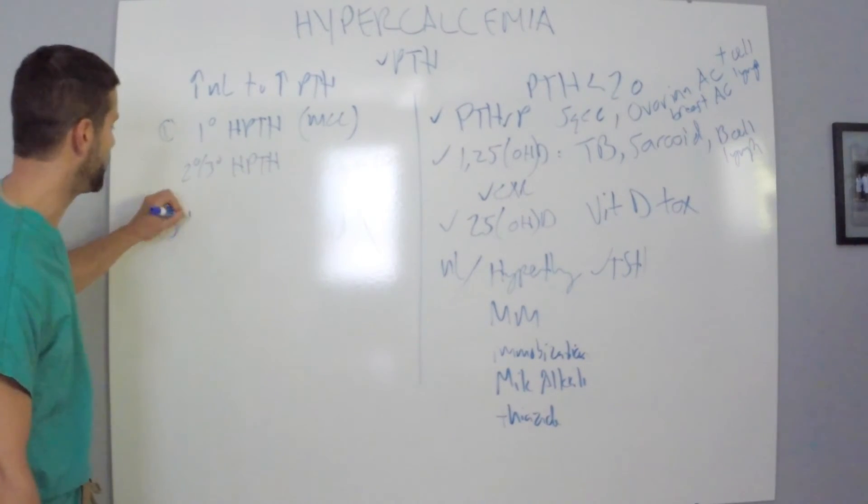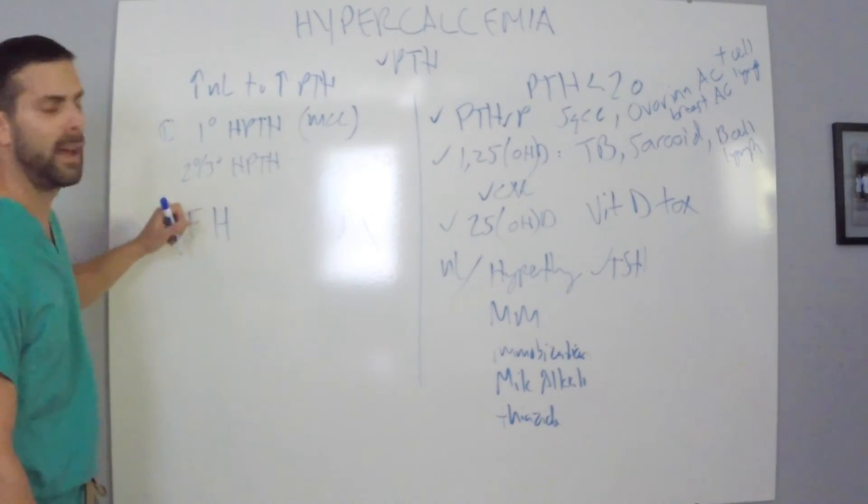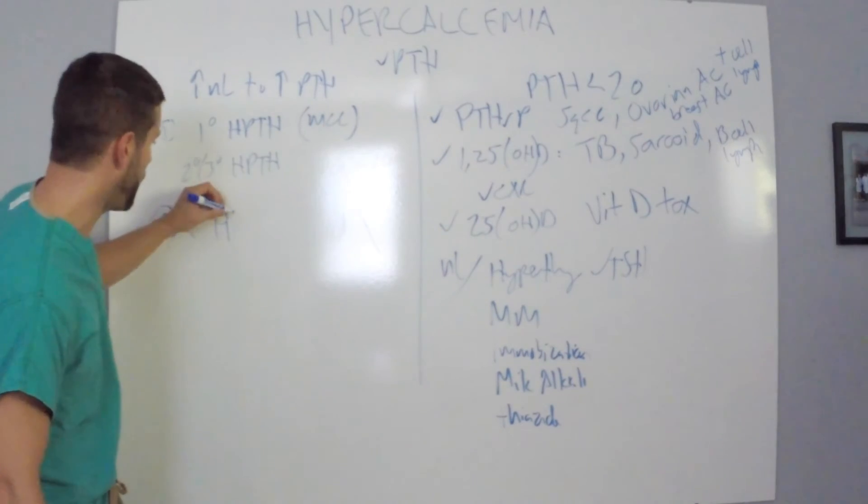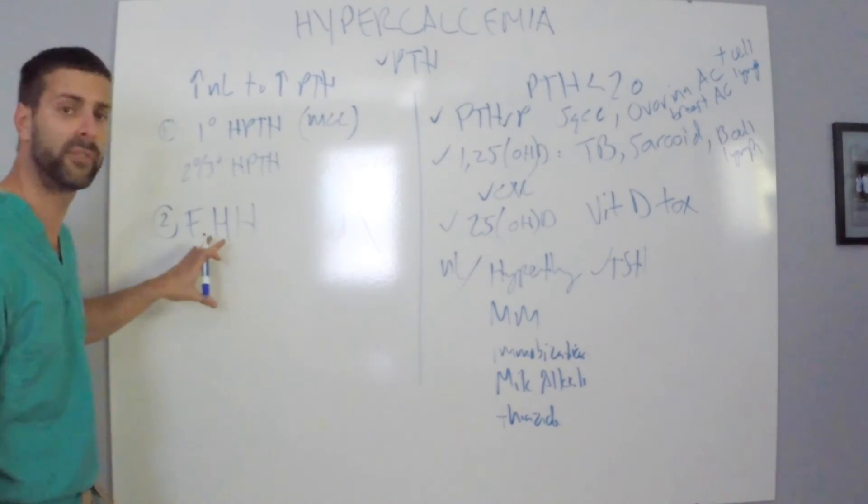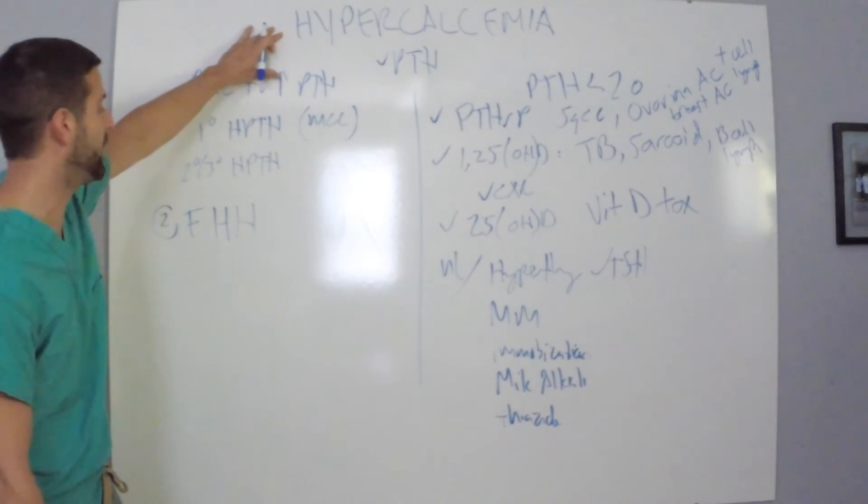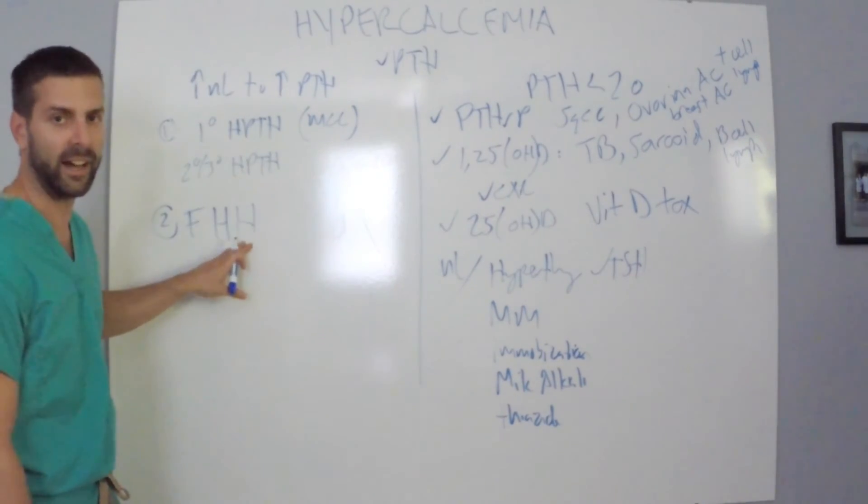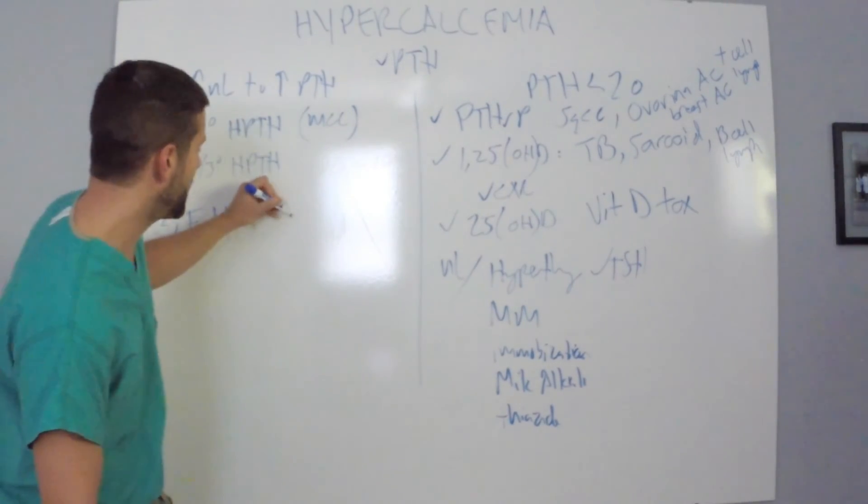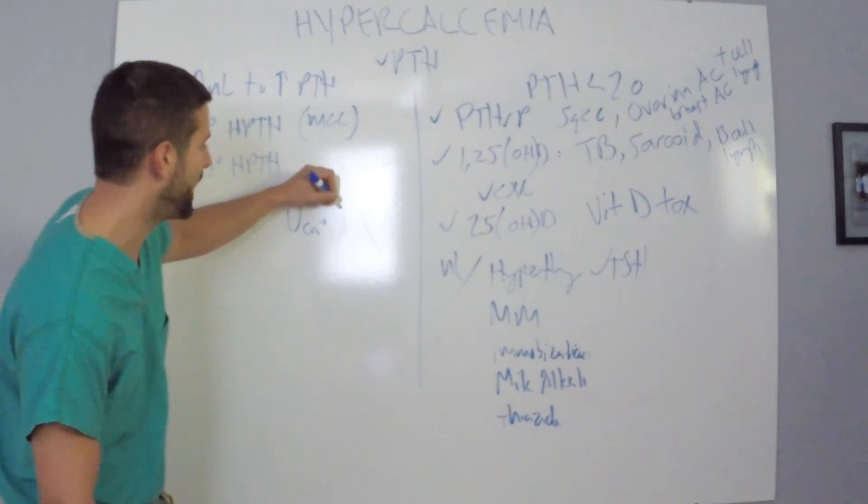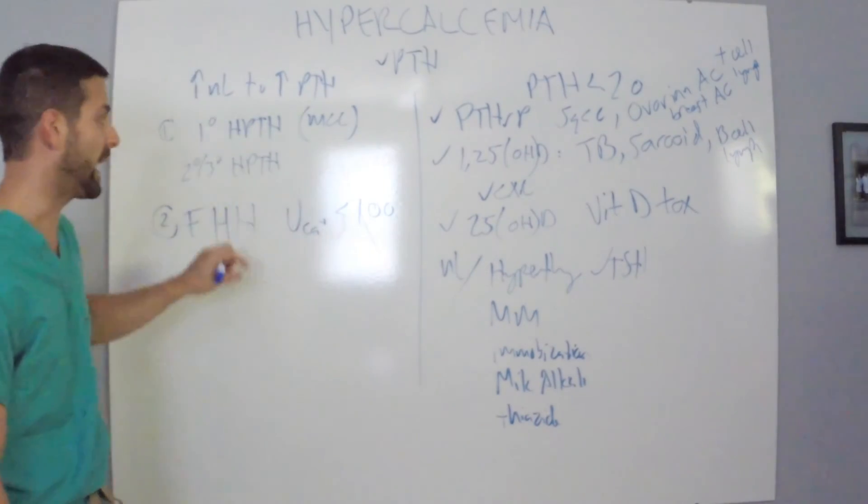Something else that causes this is familial hypercalcemic hypocalciuria. So, these people have a lot of calcium in their bones, excuse me, in their bloodstream, as noted by up here. But, they don't urinate a lot. So, when you actually check the urine calcium, you're going to find that the value is going to be less than 100.